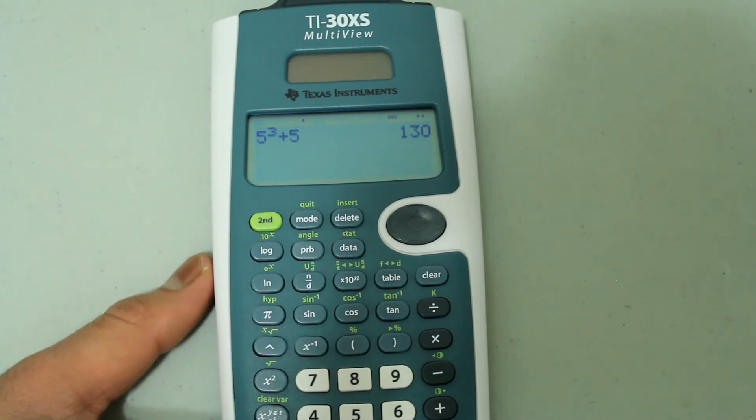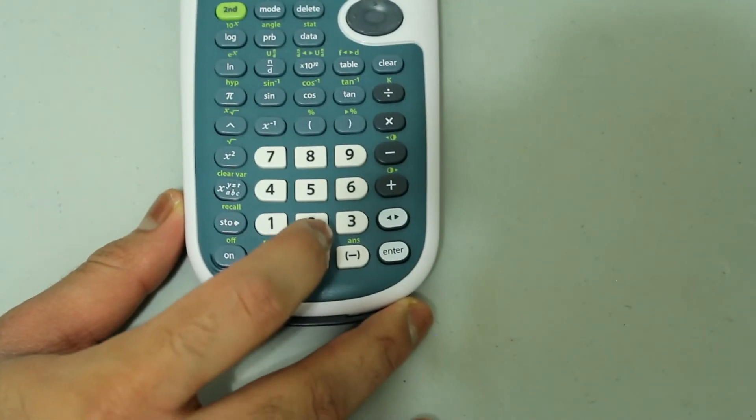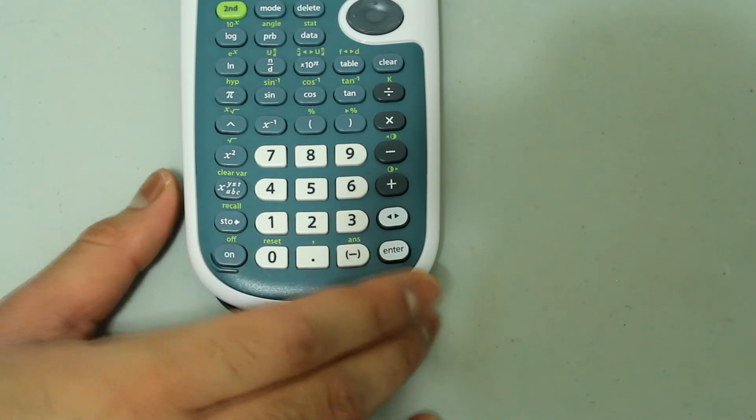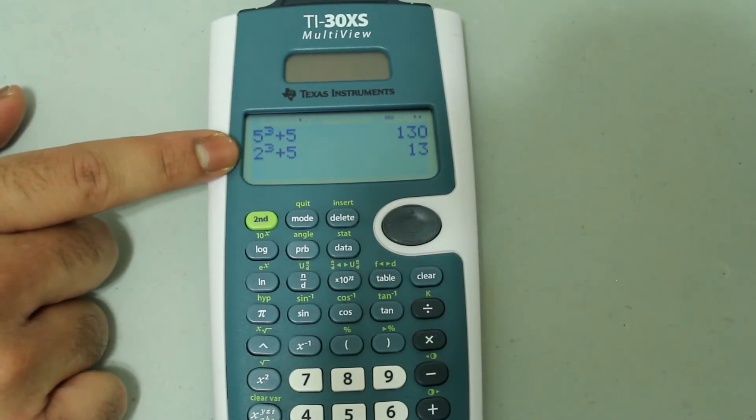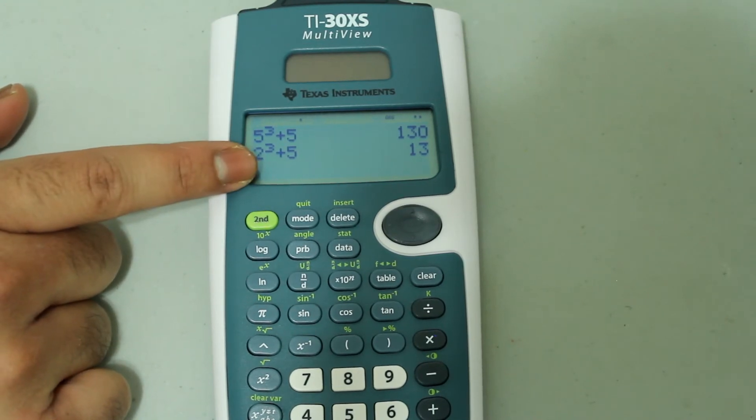And if I just do the same thing with another one, type in 2 and enter, the same thing happens. That number is now cubed and 5 is added to it.